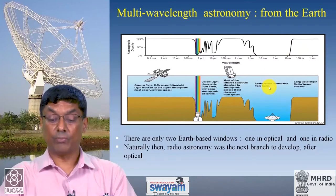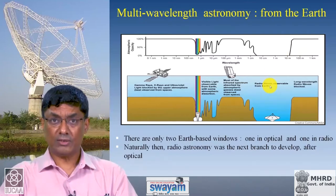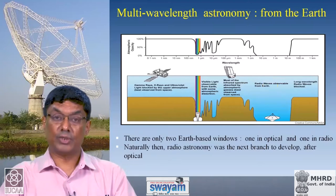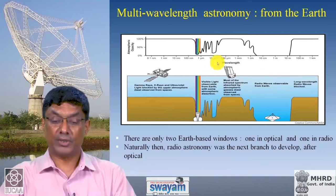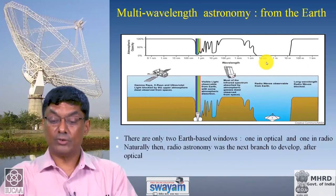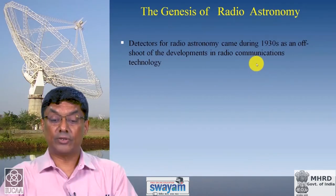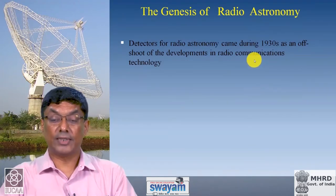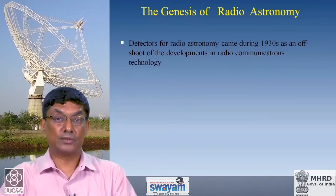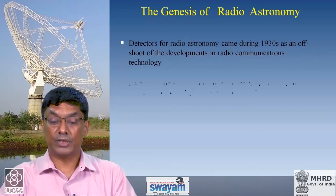It is natural that radio astronomy was the next branch of astronomy to take birth after optical astronomy, because that was possible to do with earth-based telescopes. The detectors for radio astronomy came as an offshoot from developments in radio communication technology in the 1930s, when mankind learned how to generate and receive long-distance transmission of radio waves for communication purposes.